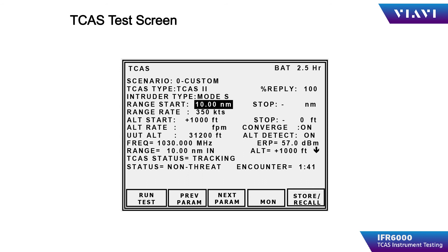For example, if the test set and antenna were placed at the nose of the aircraft, the expected azimuth would be zero degrees. If the test set antenna were placed off the starboard side of the aircraft, the azimuth would be approximately 90 degrees. As the scenario continues to progress, the TCAS processor should generate a traffic advisory and eventually a resolution advisory. The scenario can be repeated as many times as required for testing the TCAS.